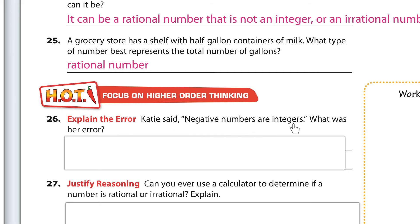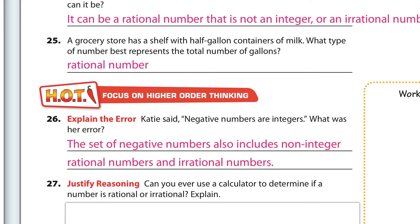Explain the error: Katie said negative numbers are integers. What is her error? Because it's not just negative numbers — you can have negative decimals, and negative decimals aren't integers. The set of negative numbers also includes non-integer rational numbers and irrational numbers. For example, negative 3.6 is a negative number but it's not an integer, and negative the square root of 22 — that's irrational.